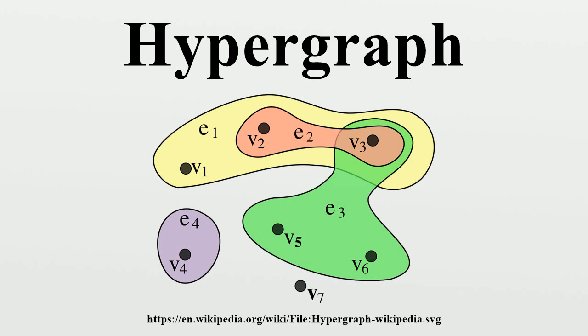Conversely, any bipartite graph with fixed parts and no unconnected nodes in the second part represents some hypergraph in the manner described above. This bipartite graph is also called incidence graph.